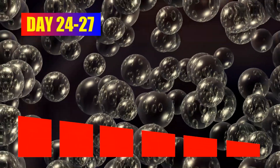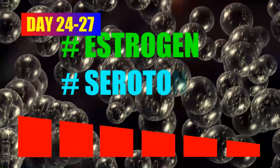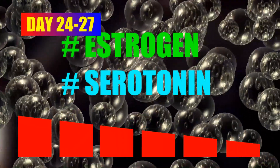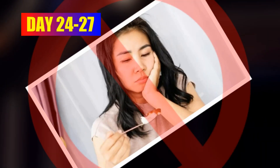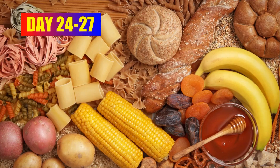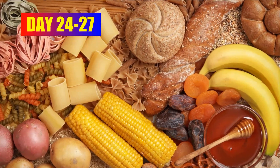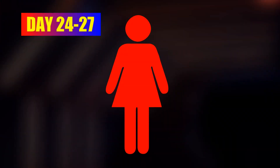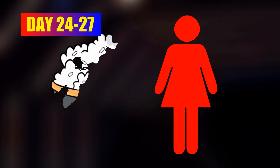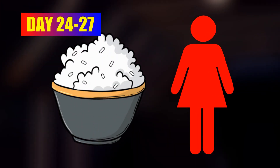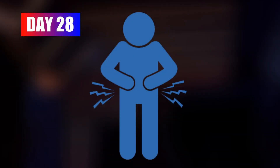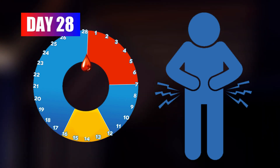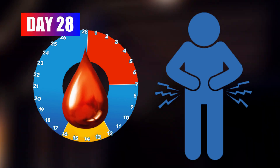On day 24, estrogen and serotonin levels can be low, which can make you feel hungry. Taking carbohydrates can increase serotonin, so every woman should consume extra rice during this time. You can also experience menstrual cramps before your period begins.